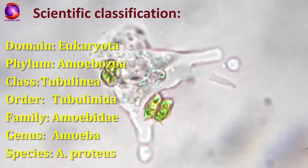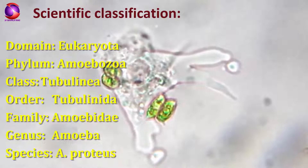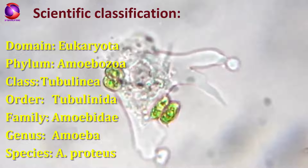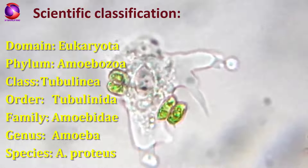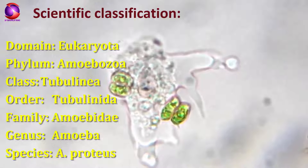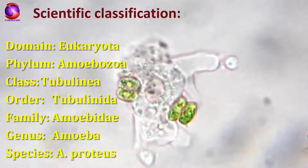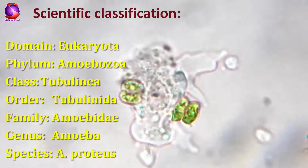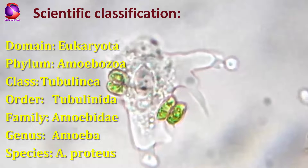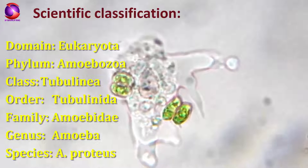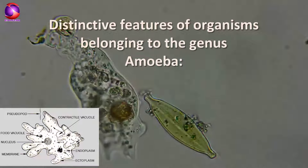Now we will look into the scientific classification of Amoeba proteus. Amoeba proteus belongs to the domain Eukaryota because a nucleus is present in the cell body. Further in classification, it belongs to phylum Amoebozoa, class Tubulinia, order Tubulinida — because during locomotion it produces numerous cylindrical pseudopods — family Amoebidae, genus Amoeba, species Amoeba proteus.